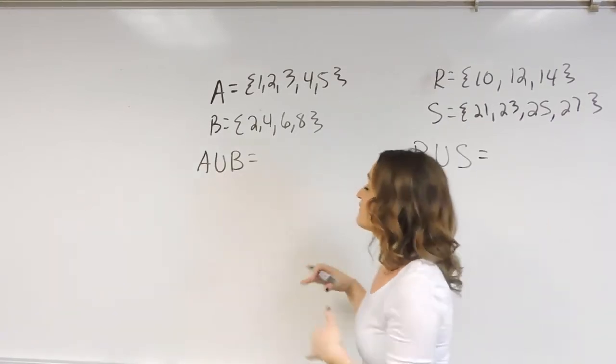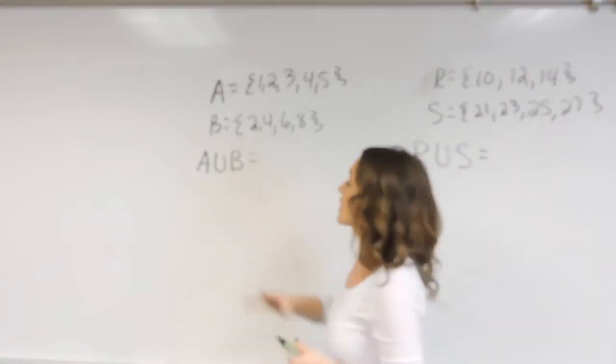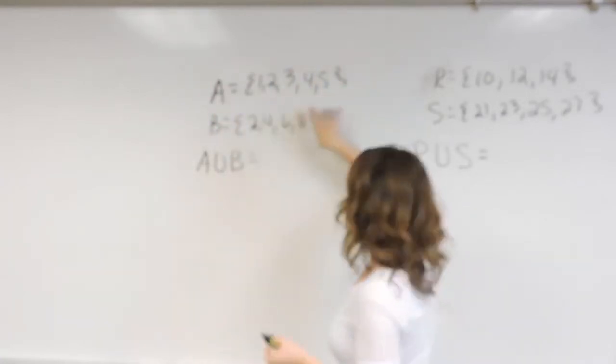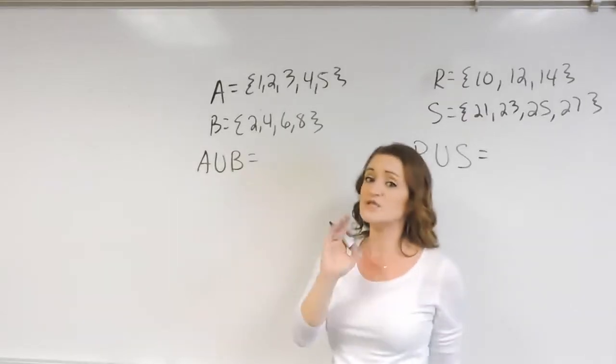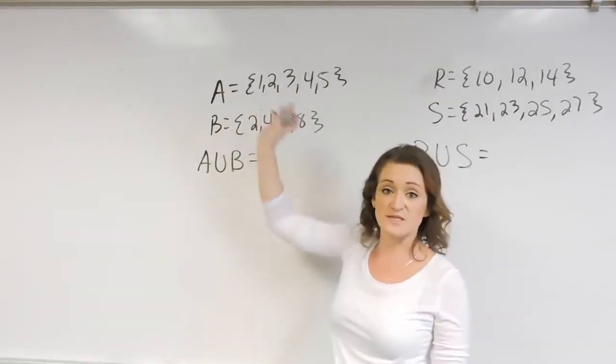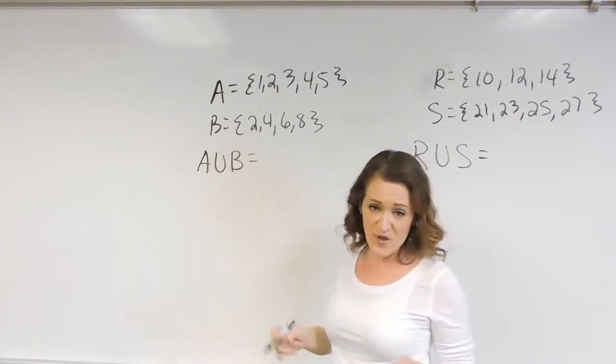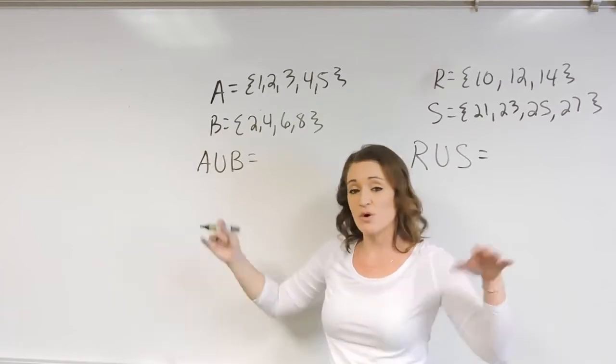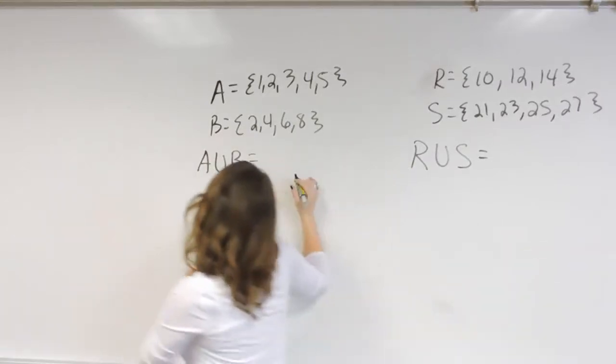When we find the union of the sets, all we're doing here is we're going to list everything in the first set and everything in the second set without repeating elements. So we don't repeat an element if it pops up more than one time, but we're going to list everything in both sets just all together. We're just going to group it all into one big set.